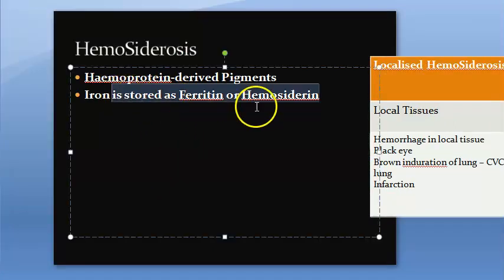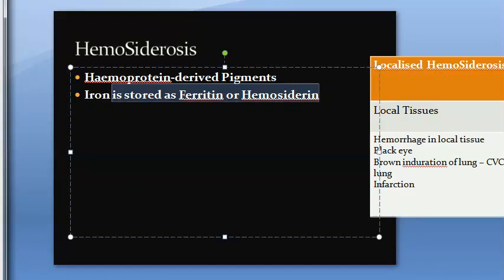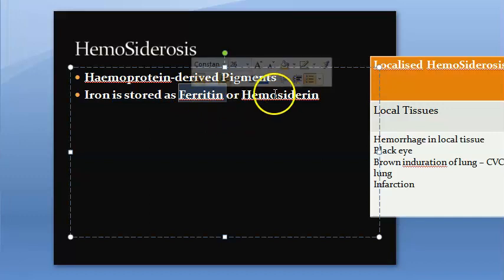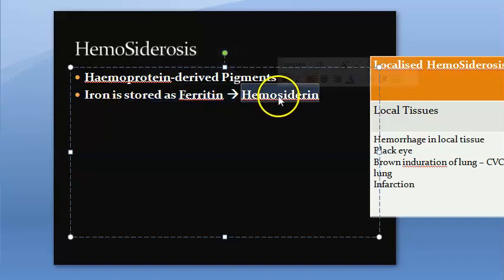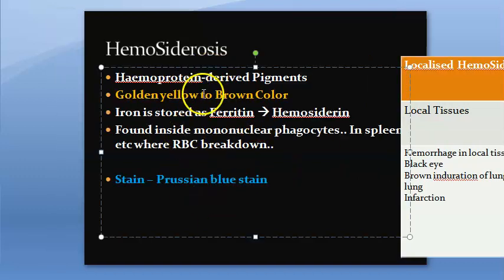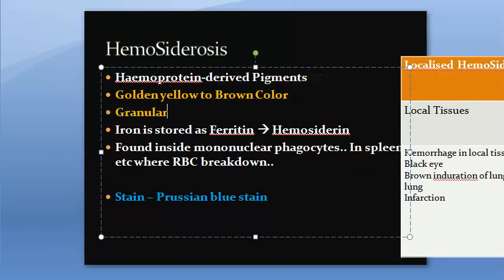Iron is stored as ferritin or hemosiderin. When iron is in excess, it is stored as ferritin, and aggregates of ferritin become hemosiderin. You can identify hemosiderin under the microscope — it is golden yellow to brown, it is a granular pigment, and it is found within the mononuclear phagocytes of the bone marrow, spleen, and liver.